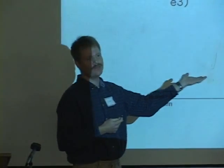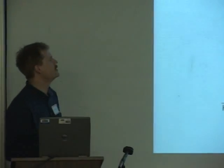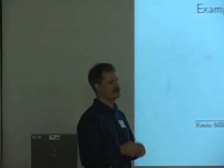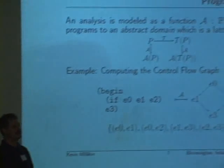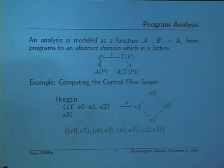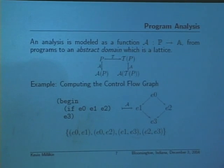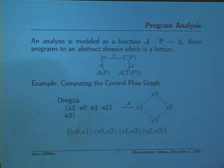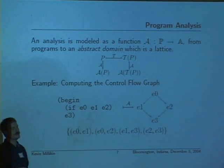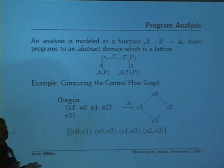The question is: is this an obfuscation? Yes. But first, it has to be an obfuscation with respect to some analysis — it doesn't make sense to ask in the abstract. The analysis I have in mind is computing the intra-procedural control flow graph of that hunk of code. We model an analysis as a function from programs to some abstract domain, which is a lattice.